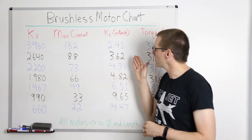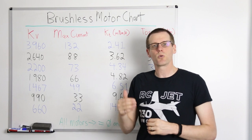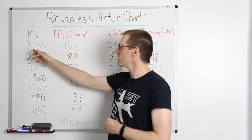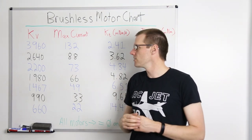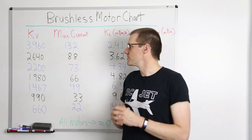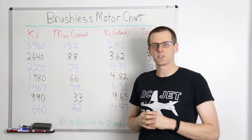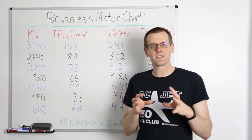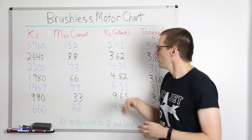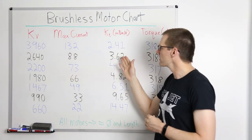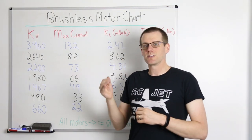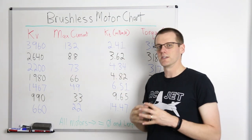The third column is the KT value — our torque constant. To calculate it, you take one divided by 3960, but you must first convert from RPM per volt into radians per second per volt by multiplying by two pi over 60. You can also use an online calculator. I've represented the torque per amp in millinewton meters per amp by multiplying the result by 1000.